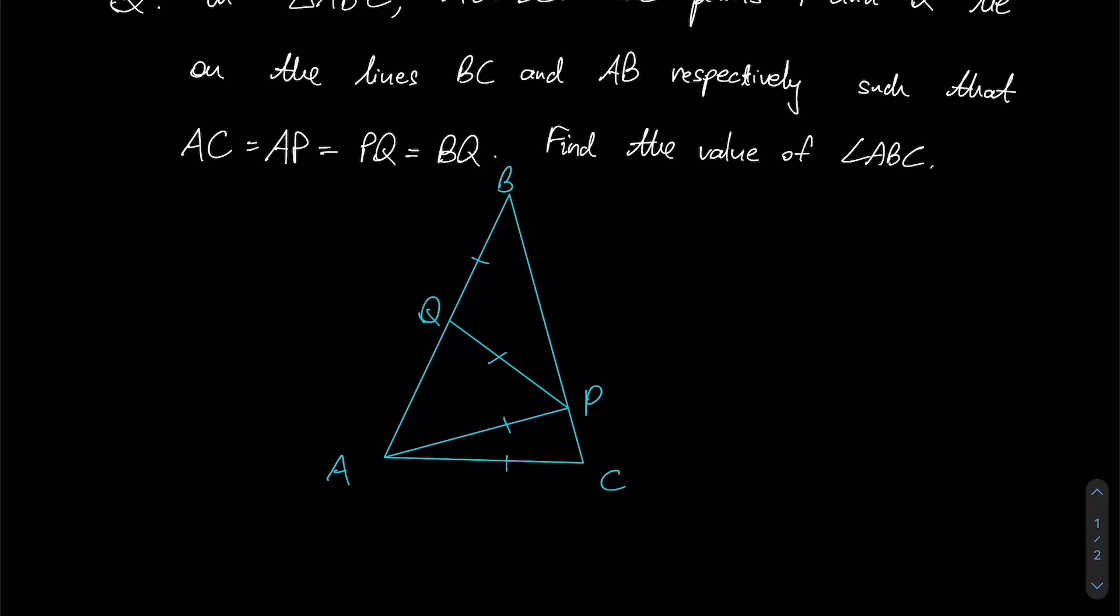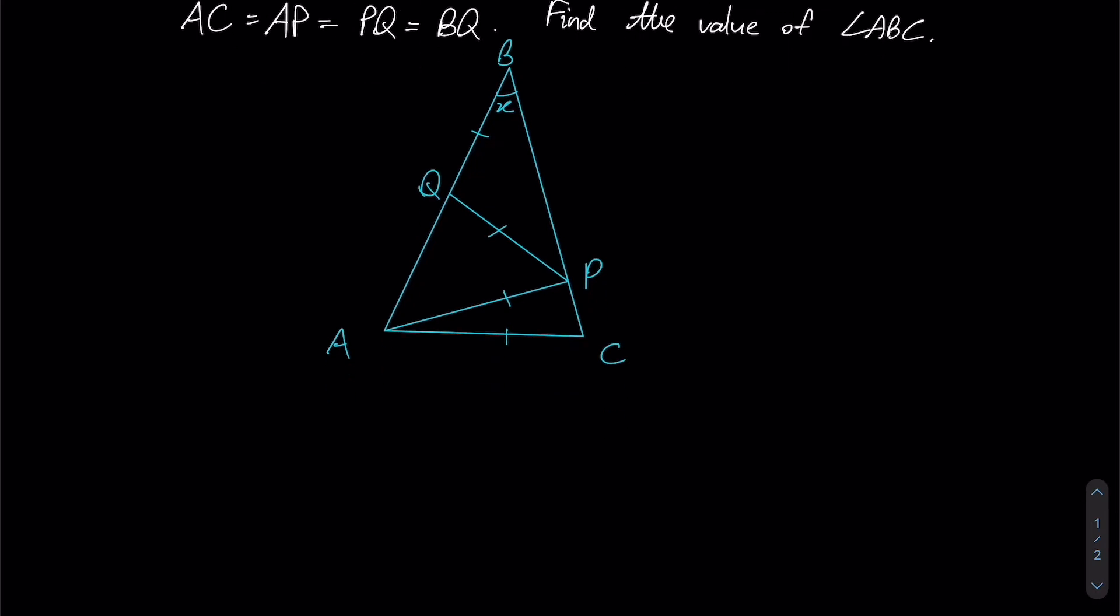Seeing as most of the lines here are equal in length, we should be able to identify several isosceles triangles. Starting from the top, let us let this angle here be x. Let angle ABC be x degrees. If this is x, notice that angle QPB itself must be x because these two are base angles of an isosceles triangle.